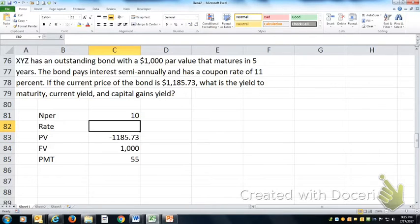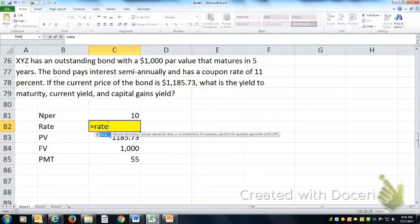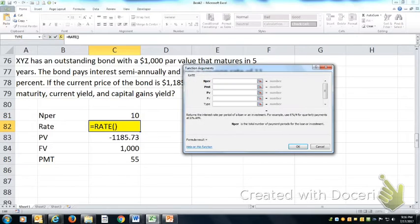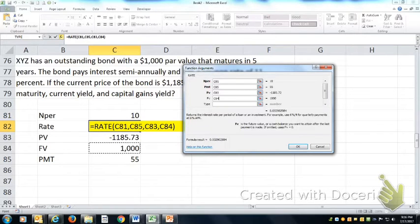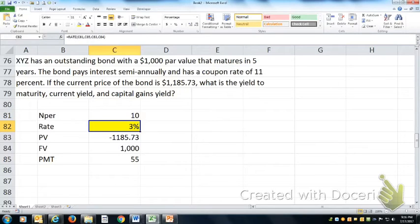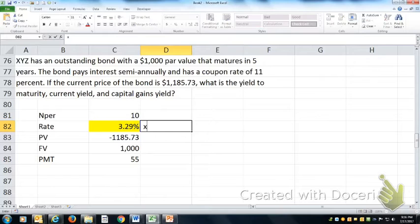So if I calculate the rate, what I'll get is the interest rate for a six-month period, but I can convert that into an annual by multiplying it by two. So the six-month yield, 3.29 times two, that will give me the yield to maturity.